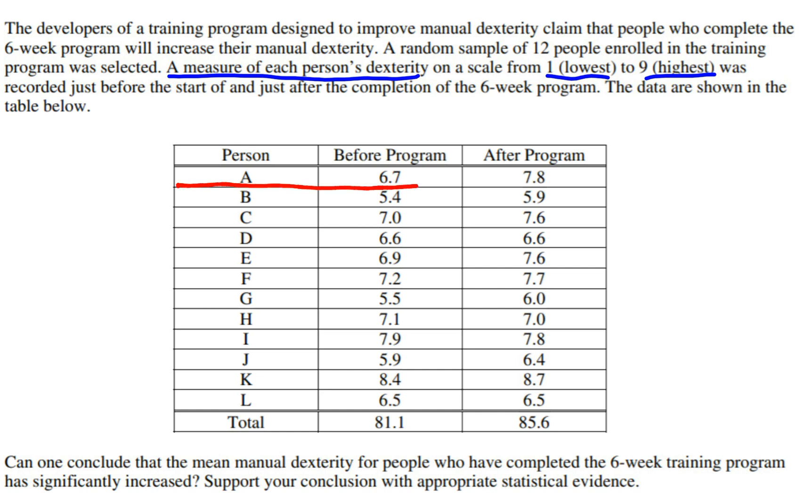If I look at this first row of data, person A, one of the first subjects, had a dexterity score of 6.7 before the experiment started. They went through this training program, and afterwards their dexterity was 7.8. So there's people with various levels of dexterity to start with.